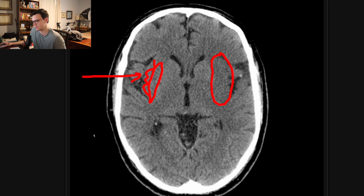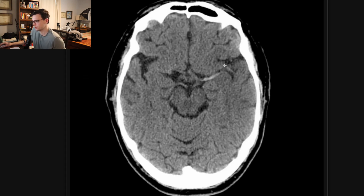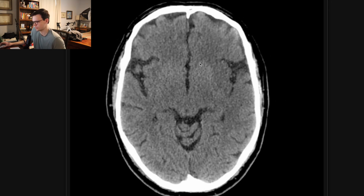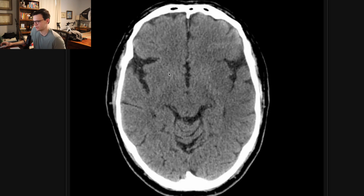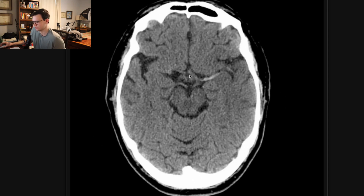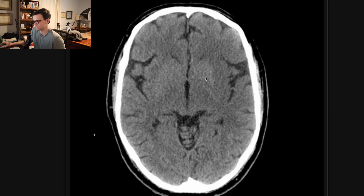This is a classic finding in the case of an acute left middle cerebral artery stroke. As I'm scrolling through, you may also notice that this vessel right here is dense — this is a dense left middle cerebral artery. Notice how on the other side you don't see that same density within the vessel; that's because there's thrombus in this vessel. So there are two findings here: the dense middle cerebral artery, as well as the loss of the insular ribbon sign, meaning you can't differentiate the cortex from the external capsule.